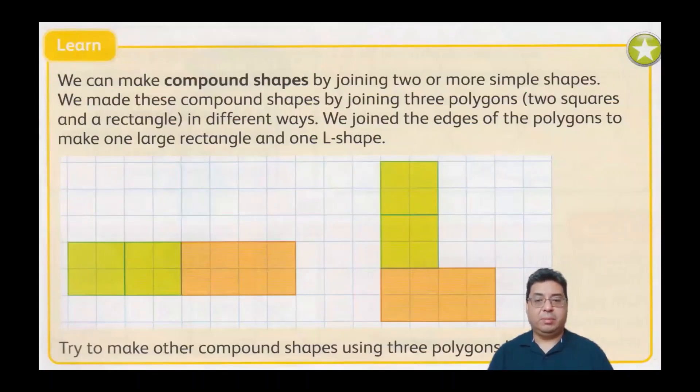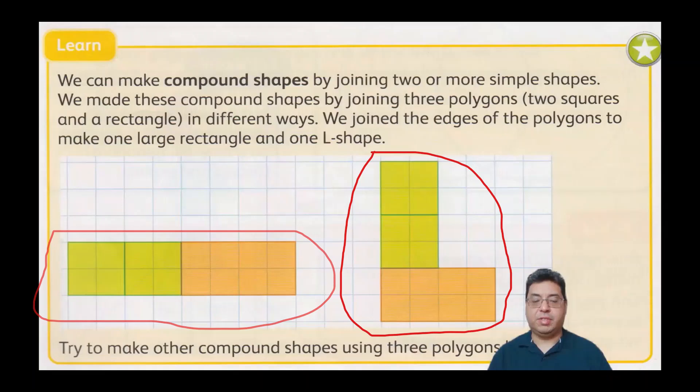I just want to give you a little bit more details on compound shapes here. We can make compound shapes by joining two or more simple shapes. We made these compound shapes by joining three polygons, which are two squares and a rectangle, in different ways. We joined the edges of the polygons to make one large rectangle and one L shape, which you can see here.